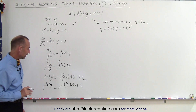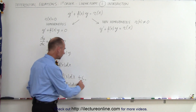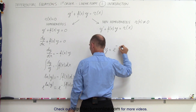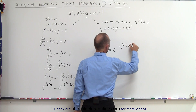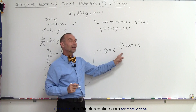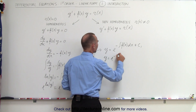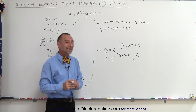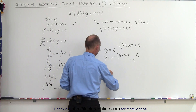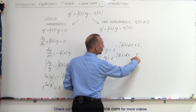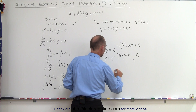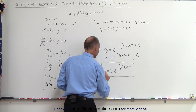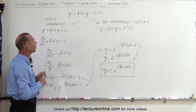Let's call the constant c1 so we can simplify later. The e to the natural log of y negates, so on the left side we're left with y. This gives us y equals e to the negative integral of f(x) dx plus c1, which we can rewrite as y equals e to the minus integral of f(x) dx times e raised to the constant. Since e raised to any constant is simply another constant, this simplifies to y equals c times e to the negative integral of f(x) dx, where c equals e to the c1. This is the general solution of the homogeneous form of the linear first-order differential equation.